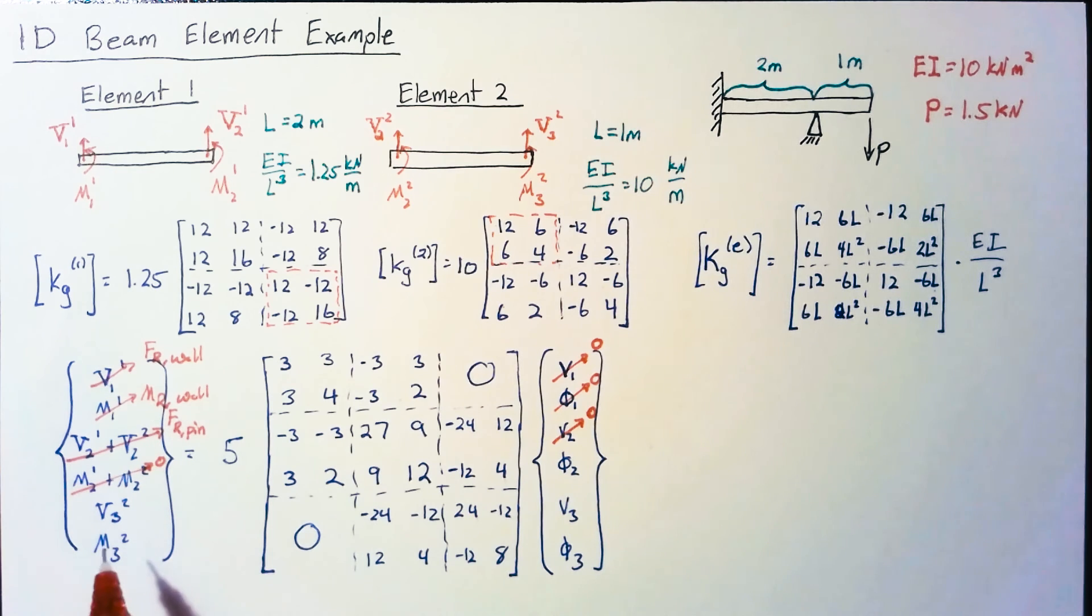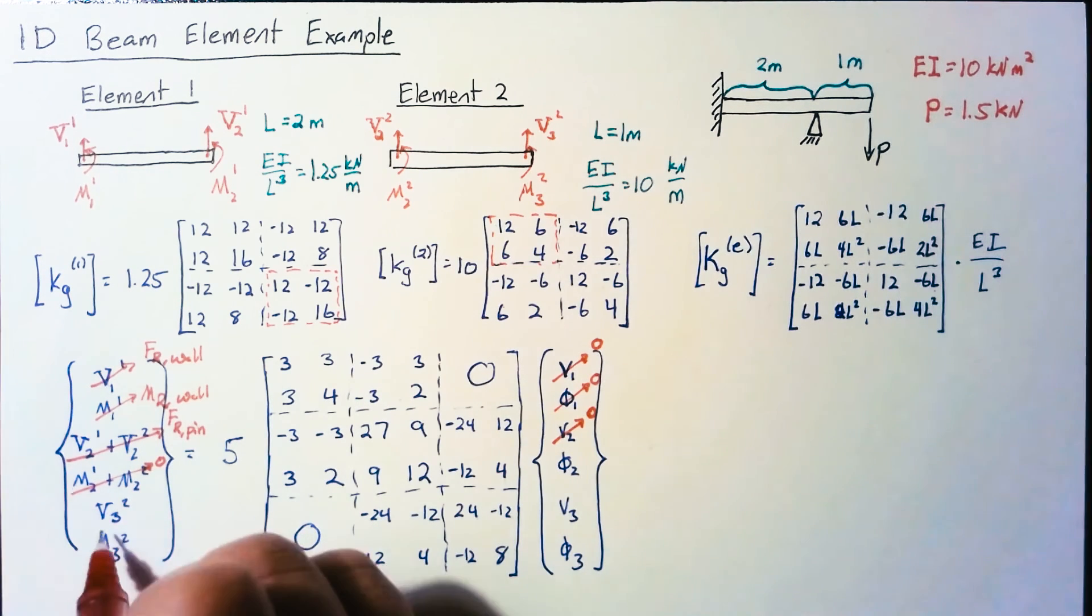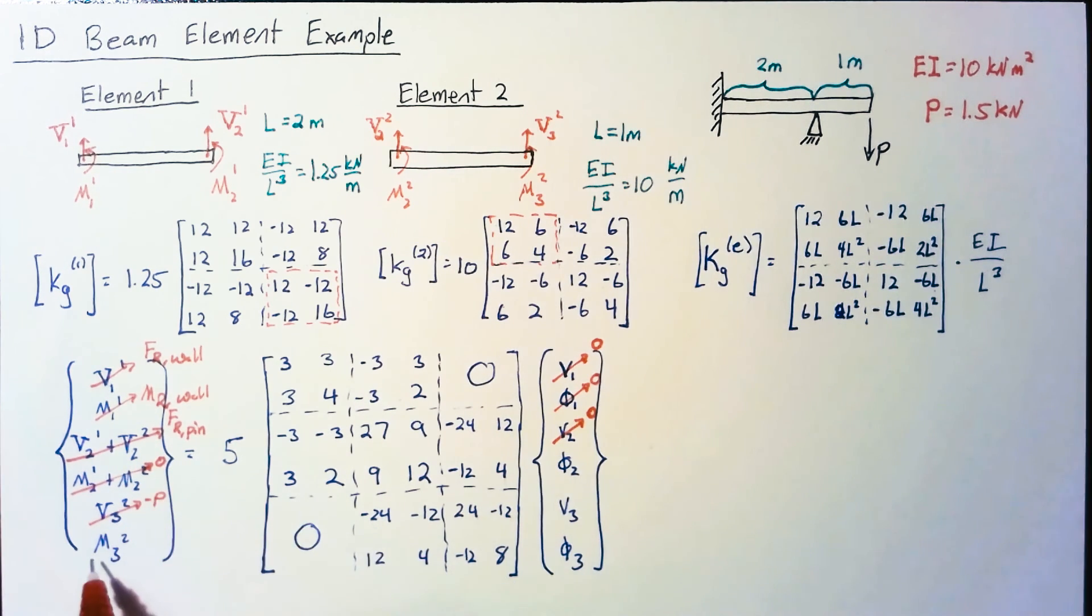There's no actual forces from the pin joint so we set both moments to zero. For node 3, our shear force is just negative P and the moment is zero since nothing is applied.